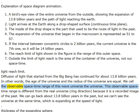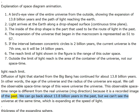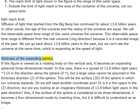We call the observable space-time range of this wave universe 'the universe.' This observable space-time range is different from the real universe ring direction, because it is a recorded image of the past. We can go back about 13.8 billion years in the past, but we can't see the universe at the same time, which is expanding at the speed of light.